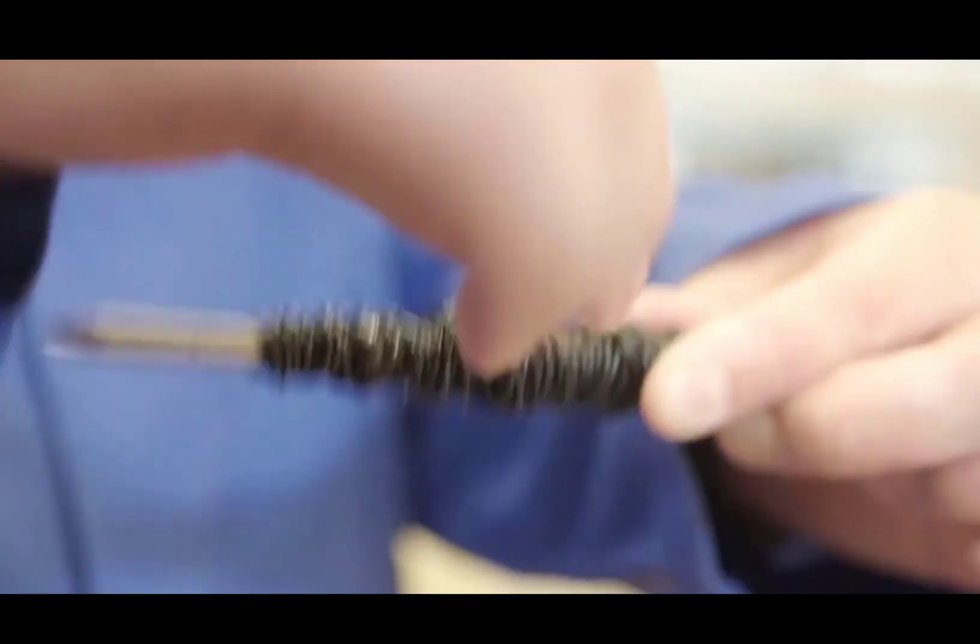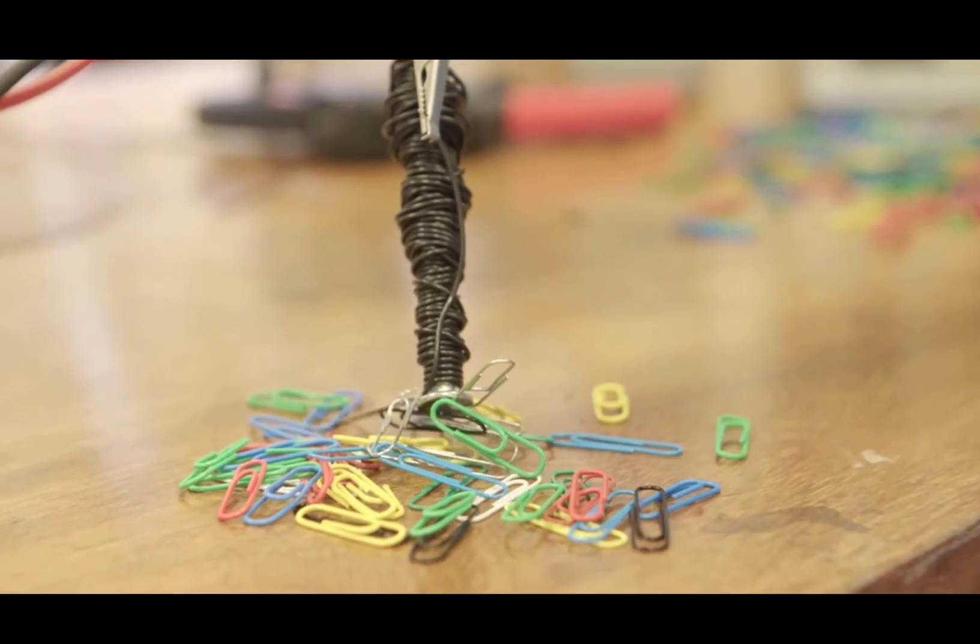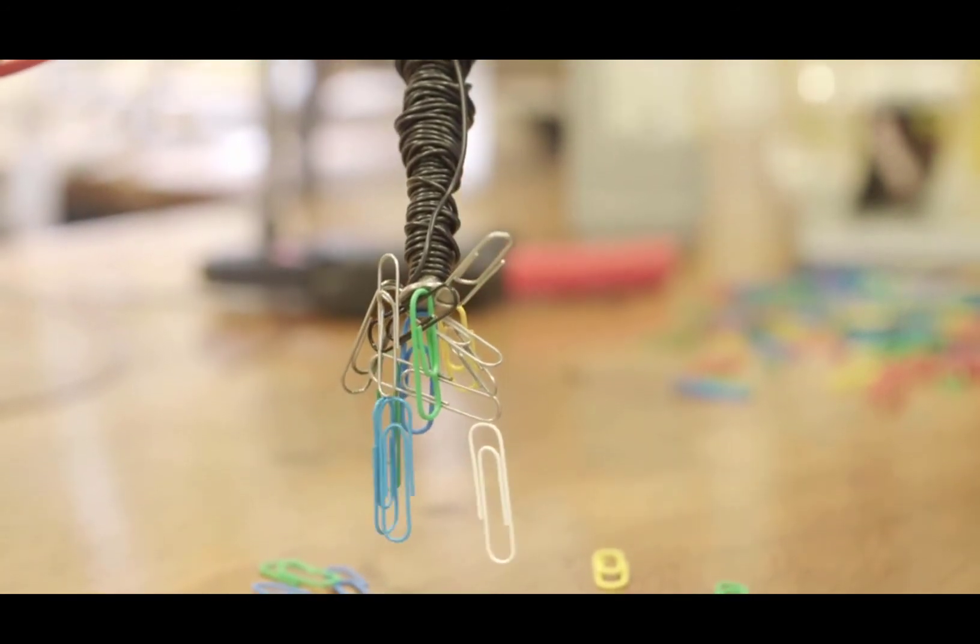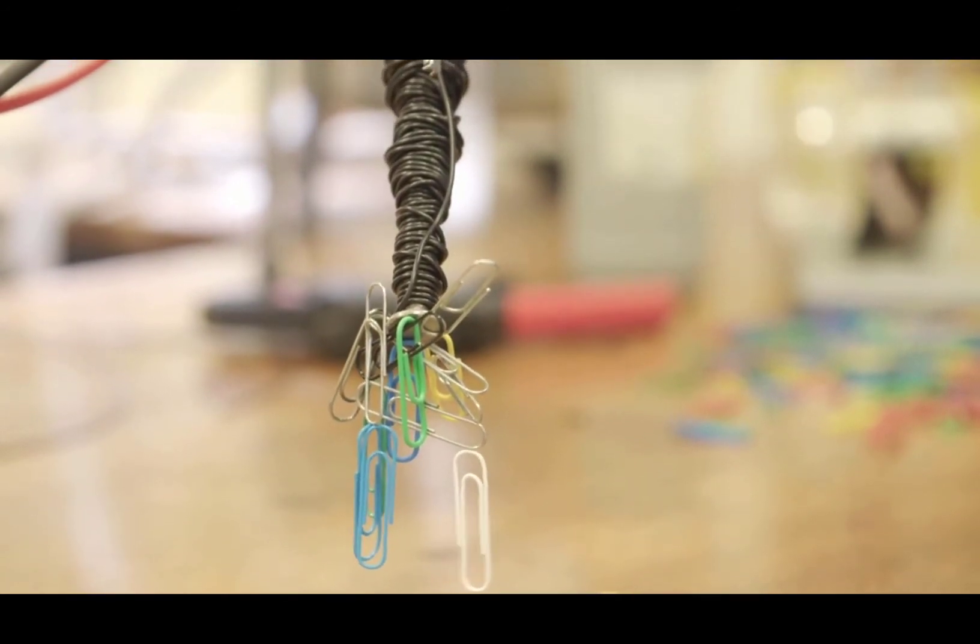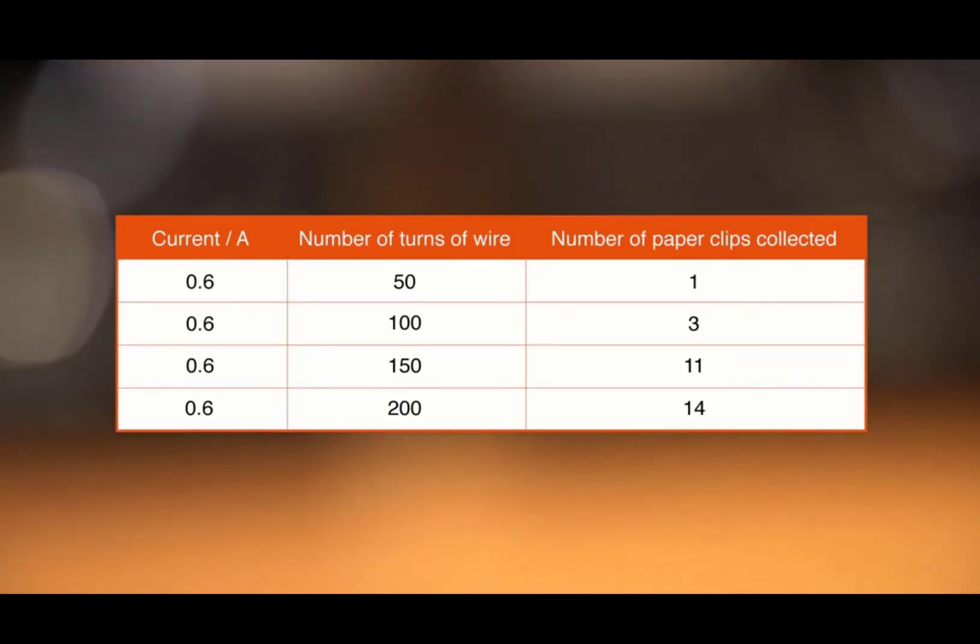The last 50 turns of wire are added and the effect is once more measured. The results are recorded in the table. It is clear that as the number of turns of wire increases, the strength of the magnet increases.